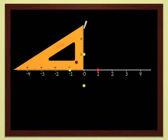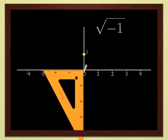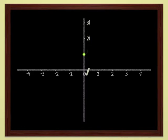But once we have the courage to leave the line, everything else is easy. We can represent 2i, 3i and so on. Each point in the plane represents a complex number. And conversely, each complex number defines a point in the plane. Points in the plane become numbers in their own right.